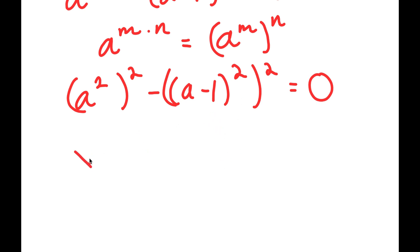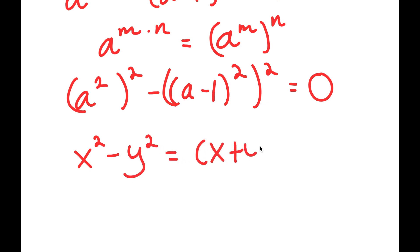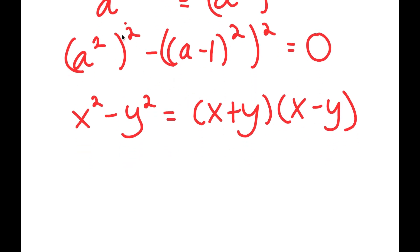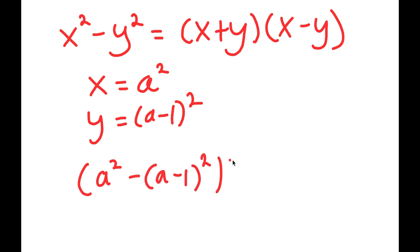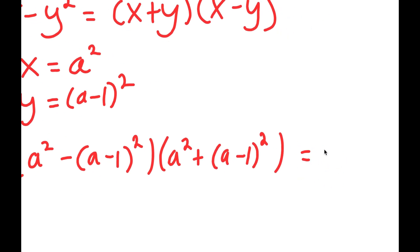If I have something in the form x squared minus y squared, this is equal to x plus y times x minus y. In this case, I can think of x as a squared and y as a minus 1 squared. So by using this property, I get a squared minus a minus 1 squared times a squared plus a minus 1 squared, and this is all equal to 0.